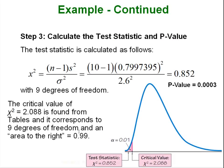Step 3 continued: calculate the test statistic and the p-value. Well the formula is very simple. We plug in n equals 10, 10 minus 1. S squared remember is the variance so we had to get the variance. This number here is the standard deviation being squared. And then all over the variance of the population. We were given that the standard deviation of the population was 2.6 so that's why this number is being squared, 2.6 squared. This gives us a chi-square test statistic of .852.